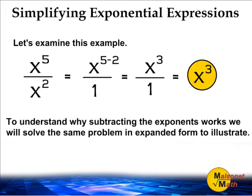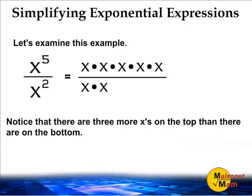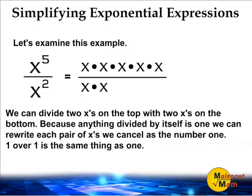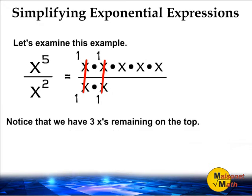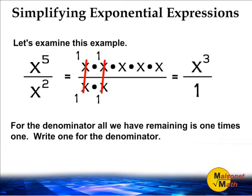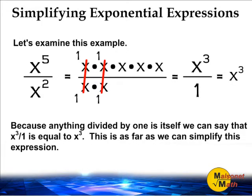To understand why subtracting the exponents works, we will solve the same problem in expanded form. If we write the numerator x to the fifth power in expanded form and write the denominator x to the second power in expanded form, we can clearly see that we have three more x's on the top than on the bottom. We can cancel the two x's on the bottom with two x's on the top and change them both into ones, because anything divided by itself is the number one. Because we have three x's remaining at the top, we can express this as x to the third power. For the denominator, we have two ones remaining that we must multiply together, and one times one is the number one. Because anything divided by one is itself, x to the third power divided by one is equal to x to the third power. This is as far as we may simplify this expression.